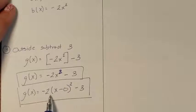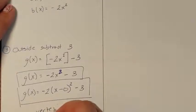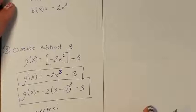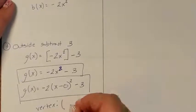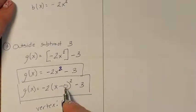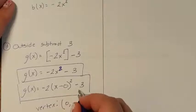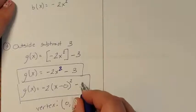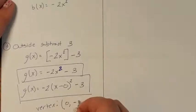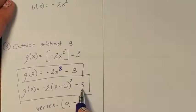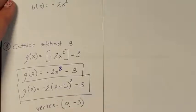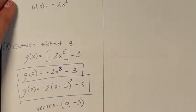From here we can more easily identify the vertex. It is the coordinate point (h, k): h is 0 (subtracting 0), and k is negative 3 (we were adding negative 3). So this is our vertex using the Chapter 1 method: (0, −3).